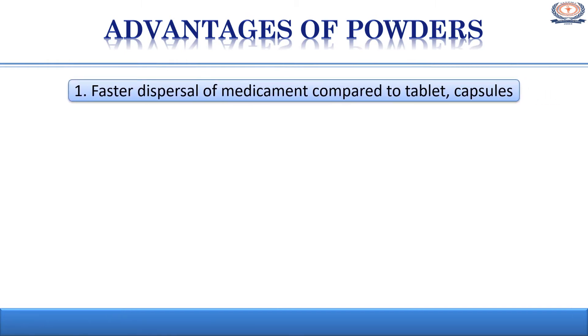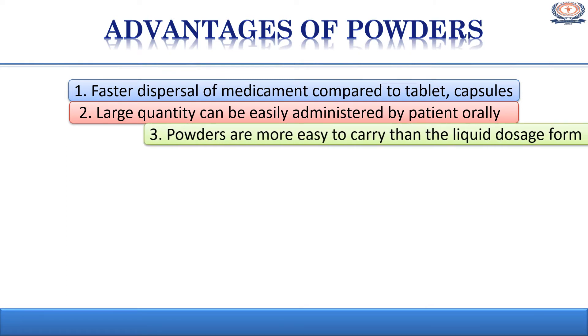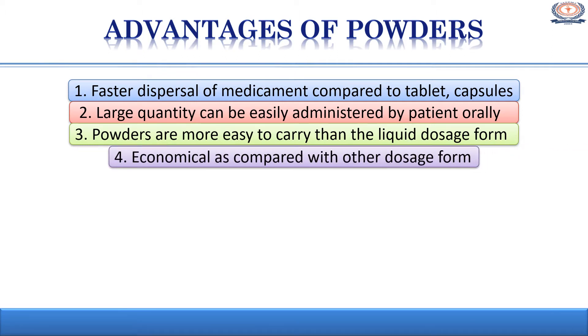The advantages of powders. Powders are one of the oldest dosage forms and are used both for internal as well as external administration. Powders have fast dispersal of medicament as compared to tablets and capsules. The onset of action of powder drug is rapid as compared to other solid dosage forms. A large quantity can be easily administered by the patient. Powders are more easy to carry than the liquid dosage form. They are economical as compared to other dosage forms as no large equipment is required for preparation of powders.